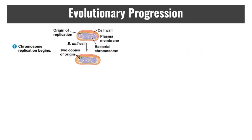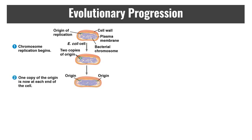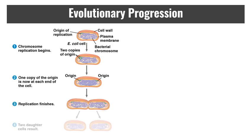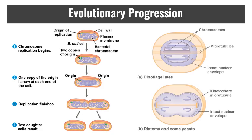The evolutionary progression of mitosis really evolved from binary fission in bacteria. You have the DNA — not really organized, you have that nucleoid — and the origin of replication is where the two copies begin to duplicate. That keeps going until one copy of the origin is at each end of the cell, and the cell finishes replication and divides into two. In dinoflagellates, a nucleus and microtubules are involved with chromosomes moving separately, and in diatoms or some yeasts there is an intact nuclear envelope and kinetochores — you can see the evolutionary steps that led to mitosis.